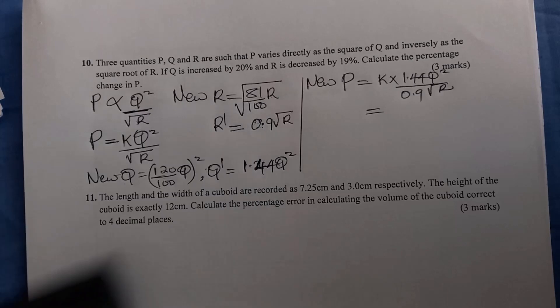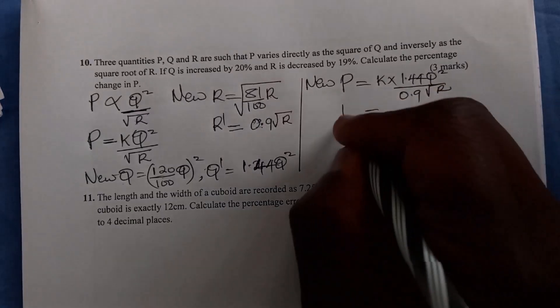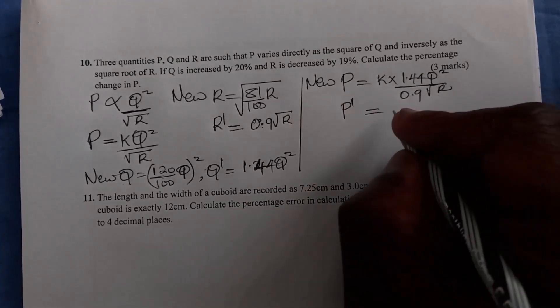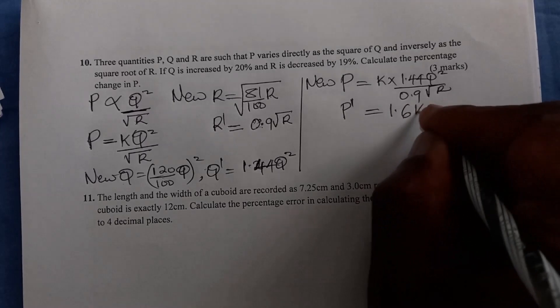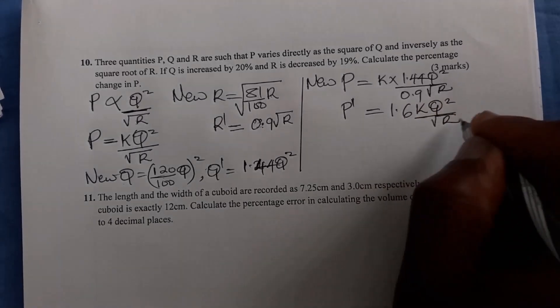So new P, which we denote by P prime, will be 1.6K times Q squared divided by root of R.